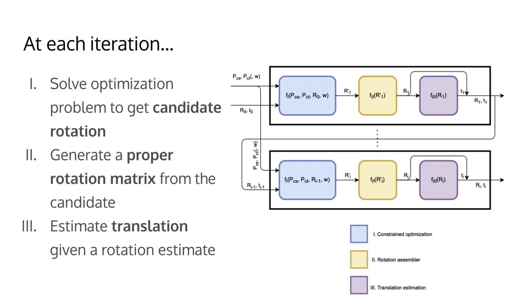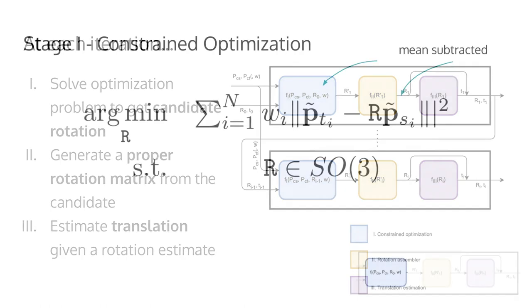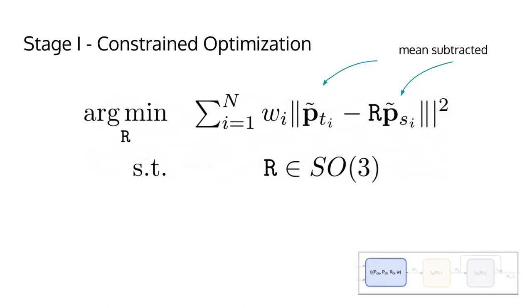Let us look in more detail into each stage. In stage 1 of our method, we solve a constrained optimization problem that is slightly different from Kabsch. What Kabsch does is find the optimal rotation that minimizes the distance between the set of points in the source and target point clouds. Note that these points have already their mean subtracted. Because it is a rotation, the solution needs to reside inside the special orthogonal group of dimension 3.